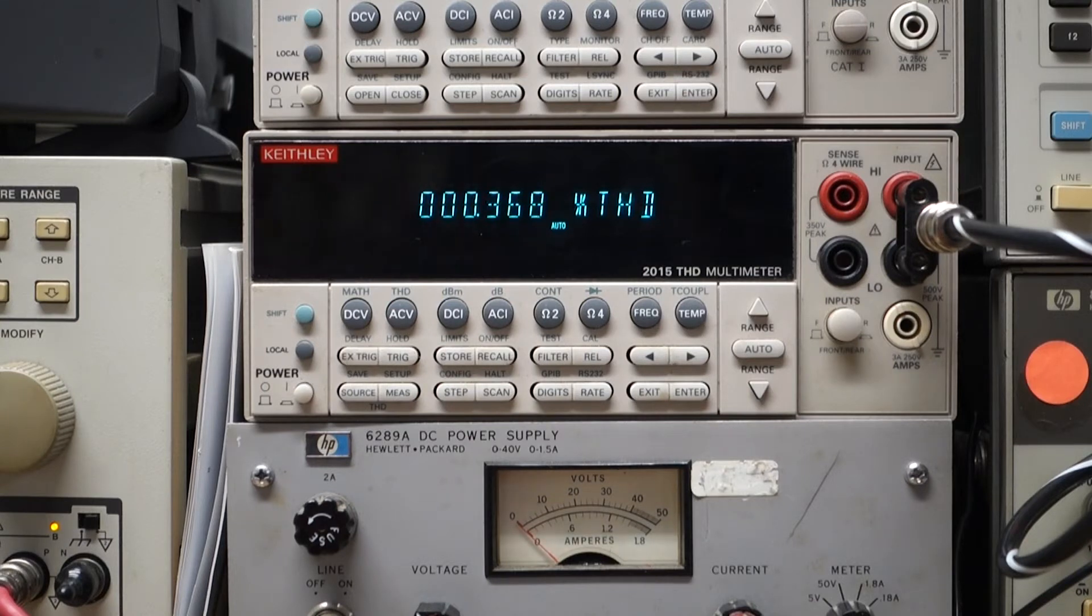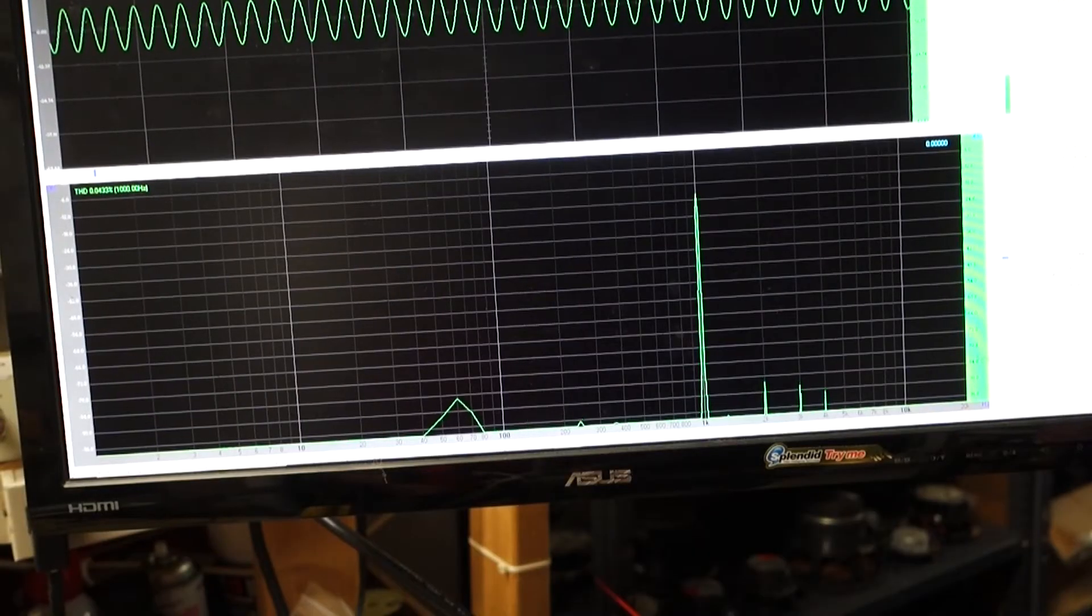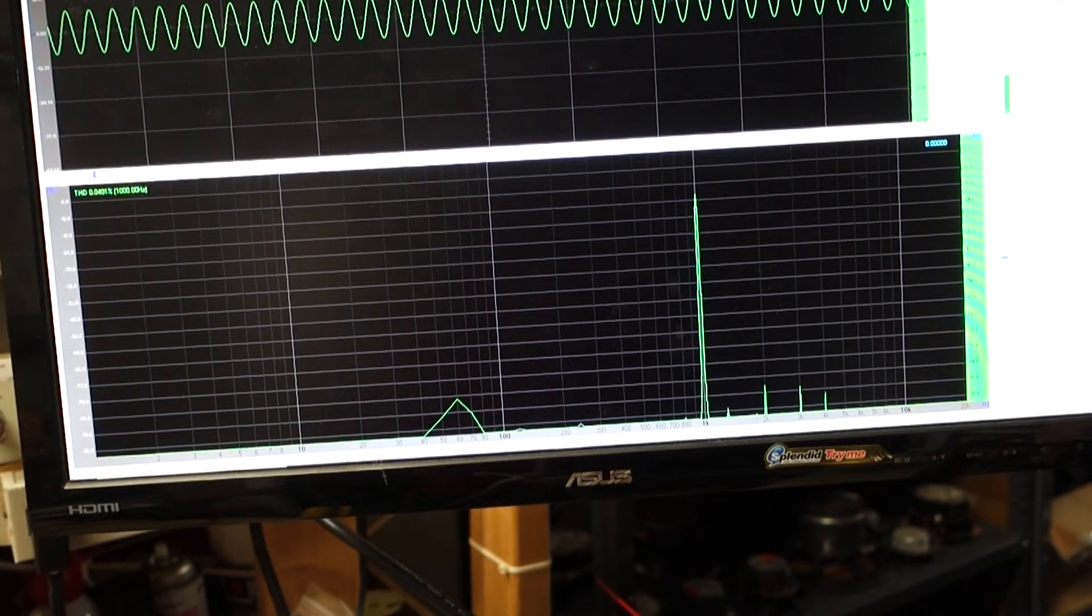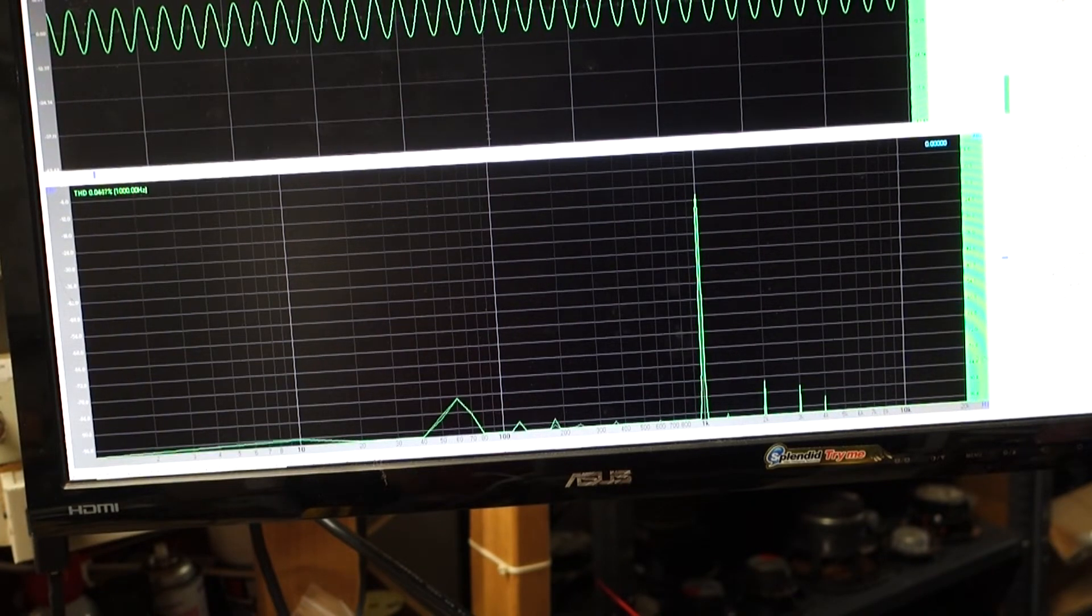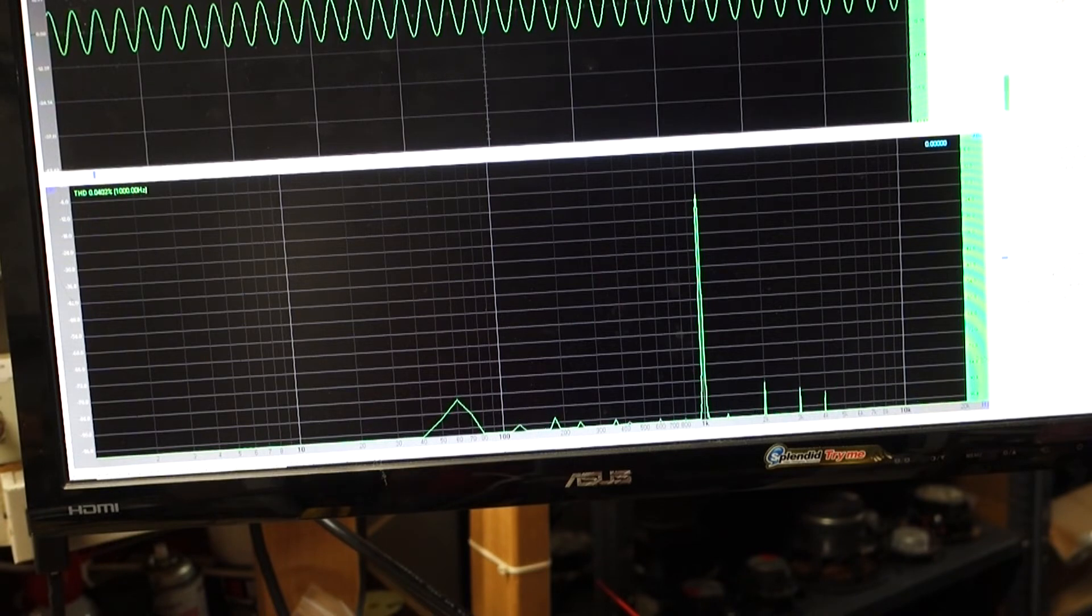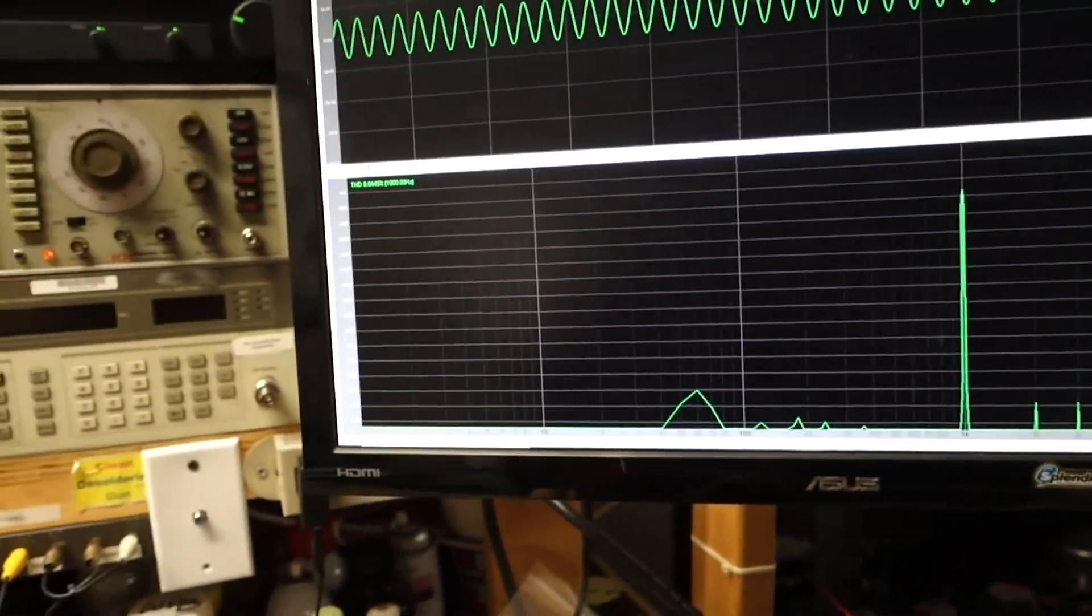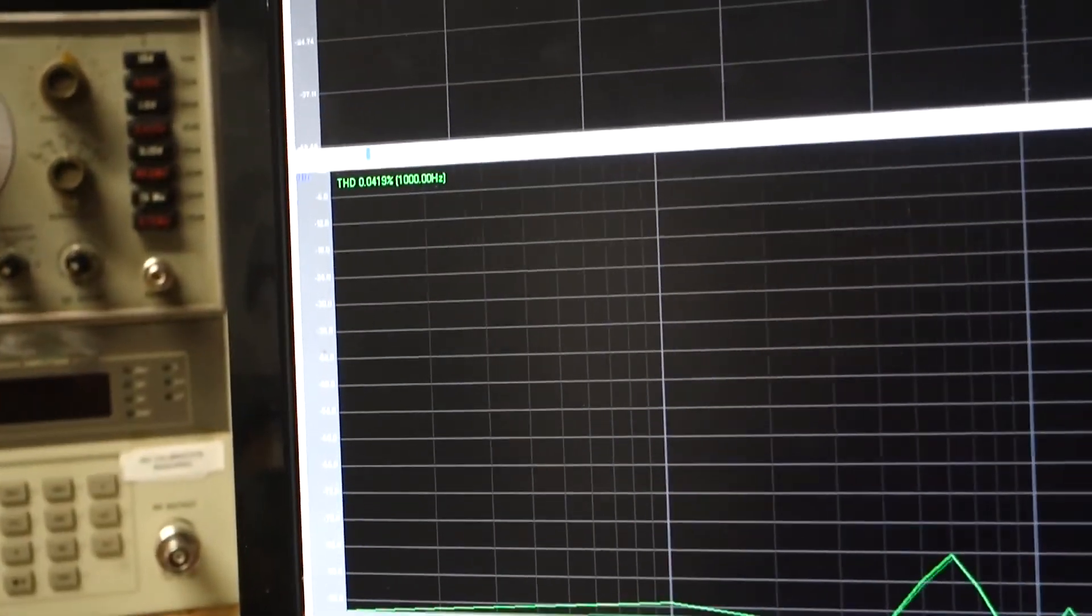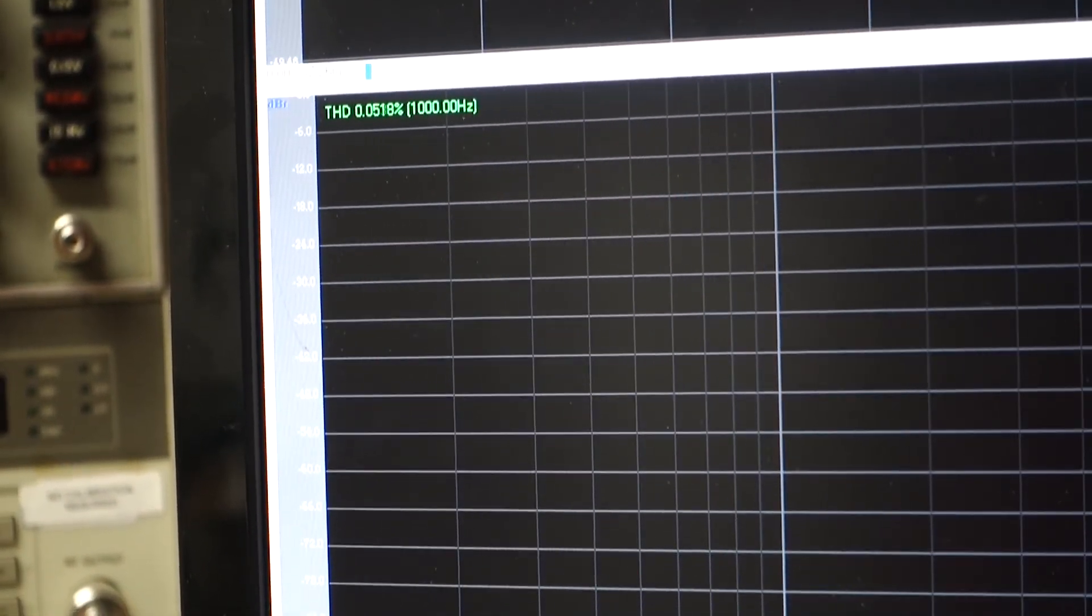So the next solution I'm going to show you is computer based. This is Visual Analyzer. It's a free download although I strongly suggest you make a donation like I did. Somebody put a lot of work into this but this will do spectral analysis and if you can see it does THD up here in the corner, it does THD and reads it out right there.